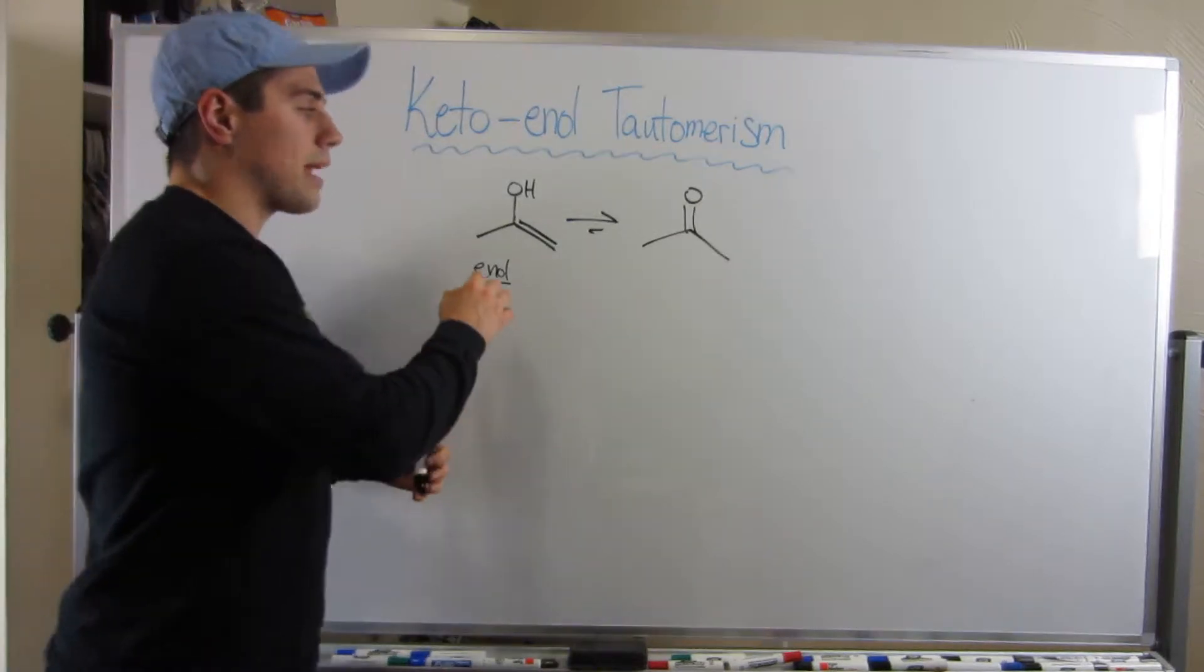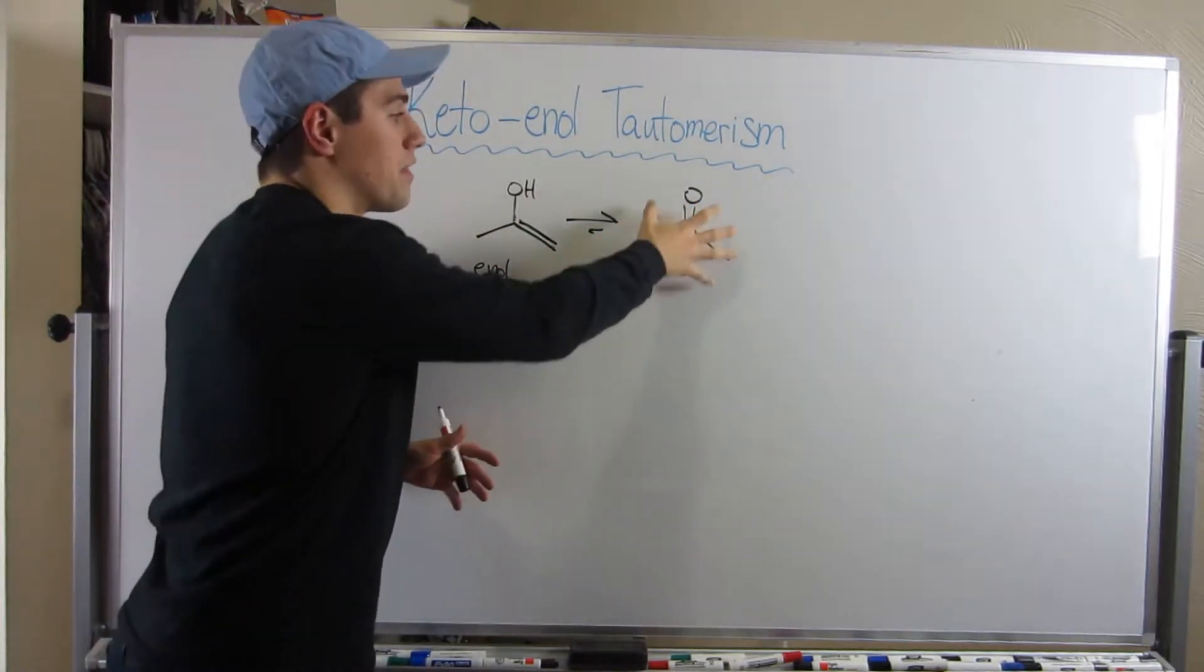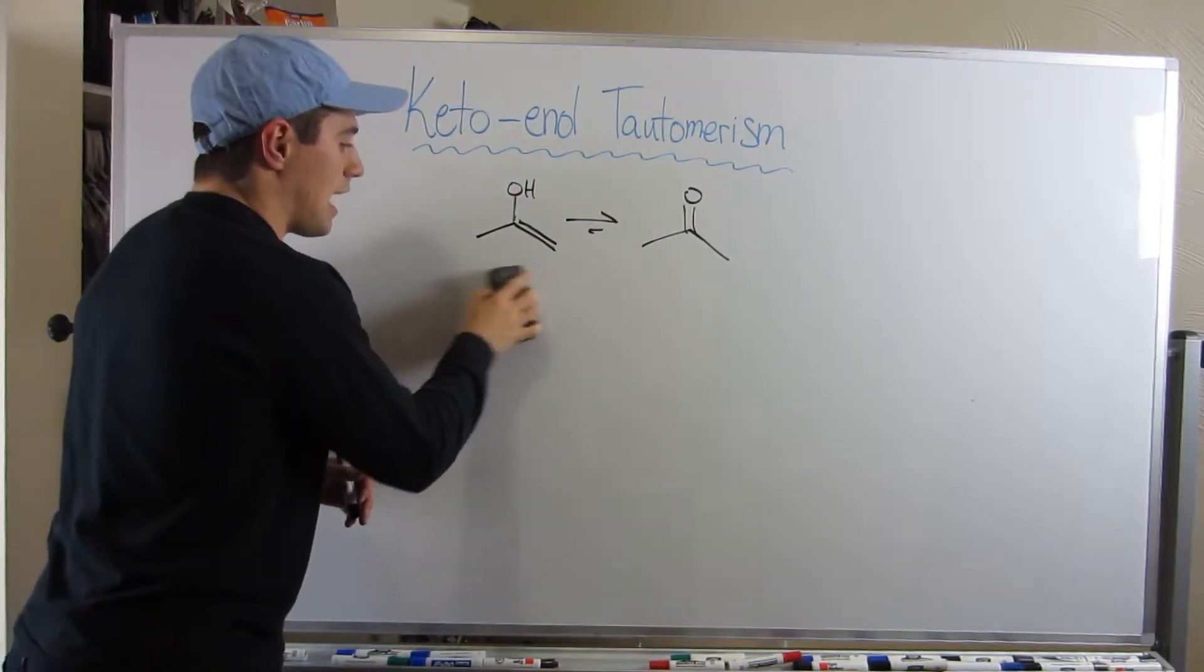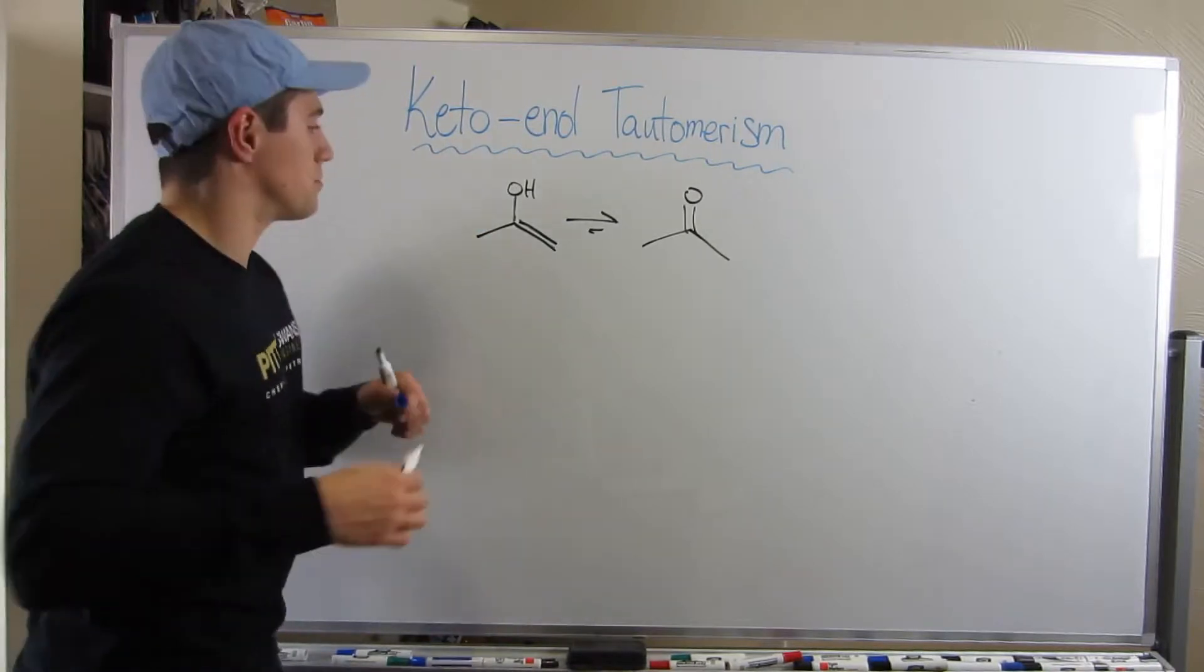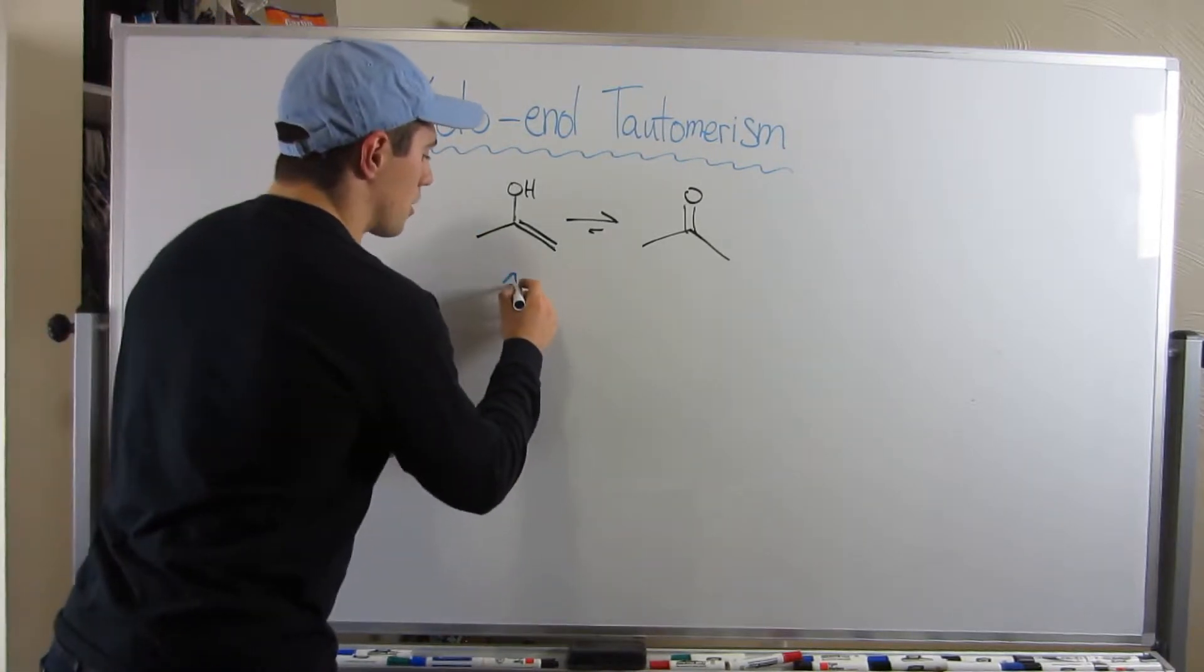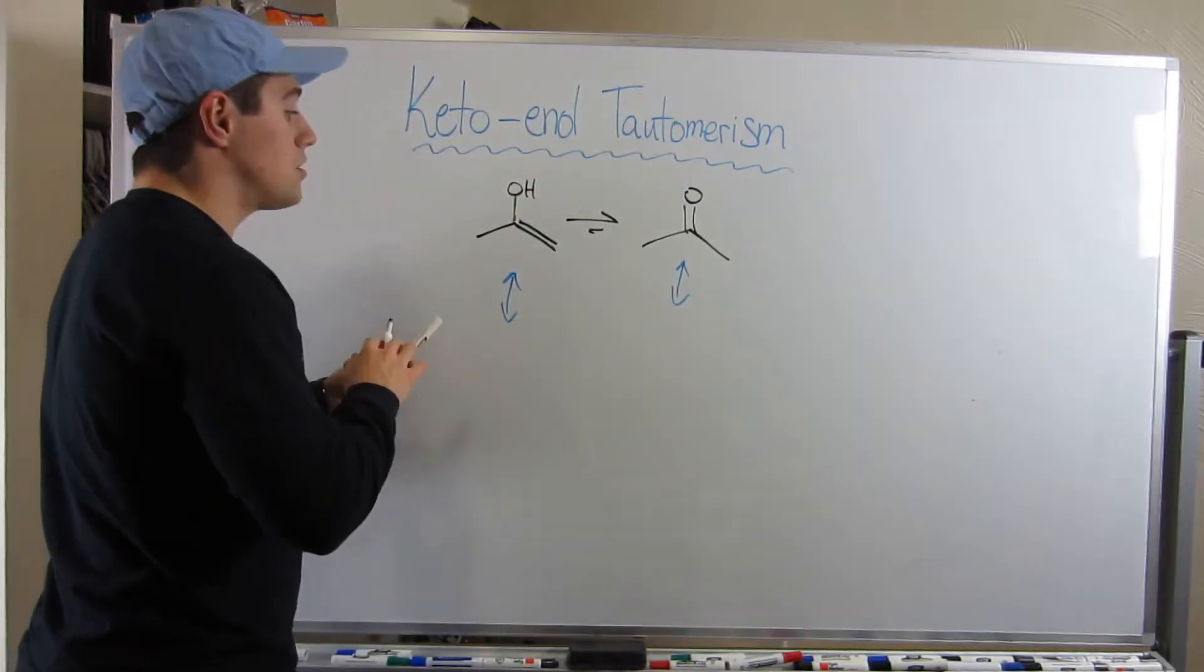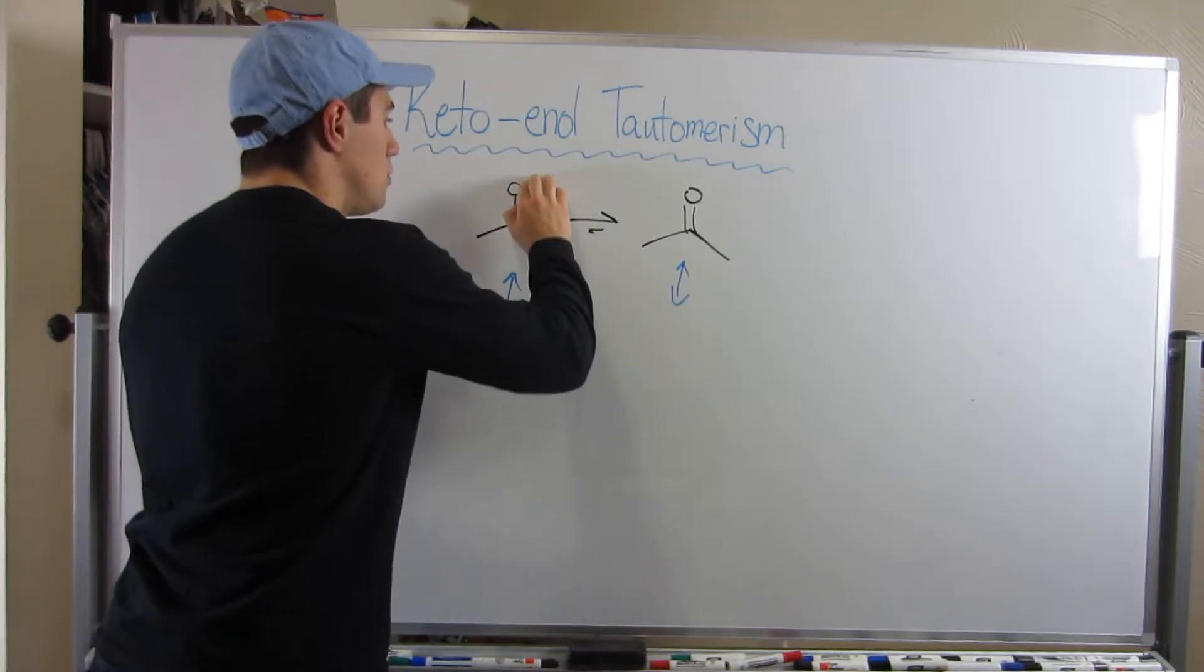So I want to show you a mechanism of how you can go from here to here and why this is favored over this. So first, let's draw some resonance—the answer to all your woes and problems. So let me draw the resonance downward. What I could do is, for here, just draw the line to the hydrogen.